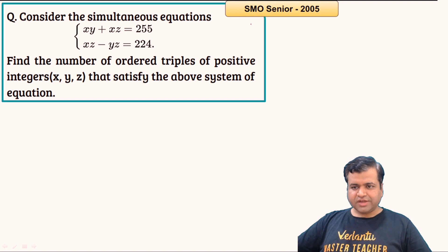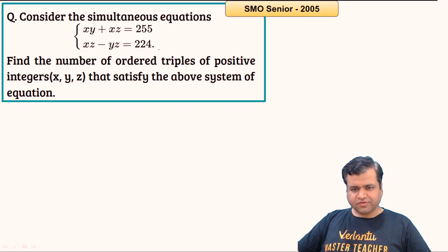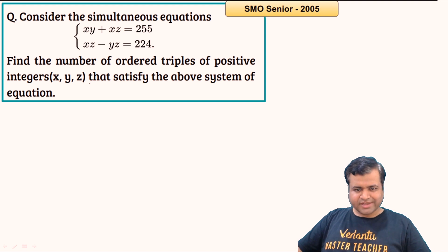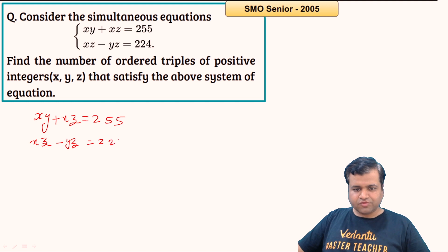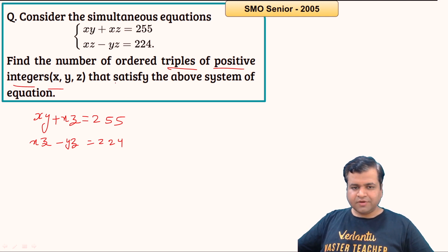This is a question from SMO Senior 2005. The question is of number theory — a simple algebraic question. Consider the simultaneous equations: xy + xz = 255, and xz − yz = 224. We need to find the number of ordered triples of positive integers (x, y, z) that satisfy this system of equations. As you can see, xz appears in both equations.